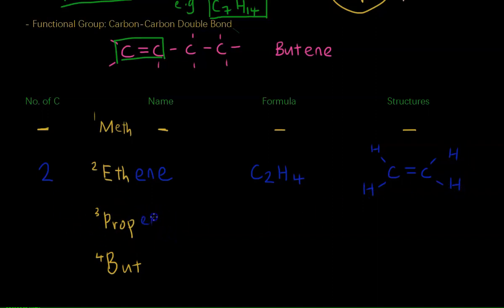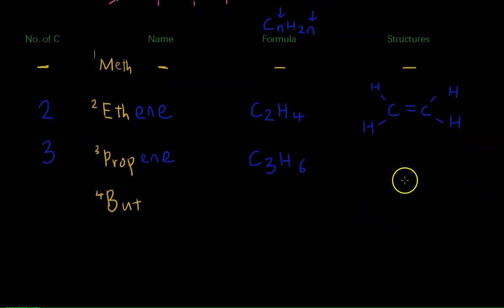Propene is the same thing. Add an -ene with three carbons. C3H6, because its formula is CnH2n. So you sub in the n here as well. So you will get a structure looking like this: H, C, C double bond, C. The rest are H's. So you may ask me, how do I draw the double bond? Like, can I draw it here? Of course, there's no problem with drawing it here. Just that it can only have one. So you either draw it here or here.